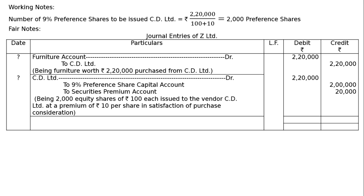Then, CD Limited debited Rs.2,20,000 to 9% preference share capital — 2,000 preference shares of Rs.100 each, that is Rs.2,00,000 — and to securities premium reserve account, that is Rs.2,000 at the rate of Rs.10, that is Rs.20,000. Being 2,000 preference shares of Rs.100 each issued to the vendor CD Limited at a premium of Rs.10 per share in satisfaction of purchase consideration. The totalling will be Rs.4,40,000. And this is the final entry.